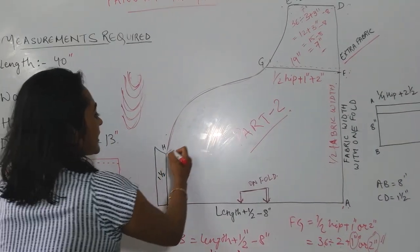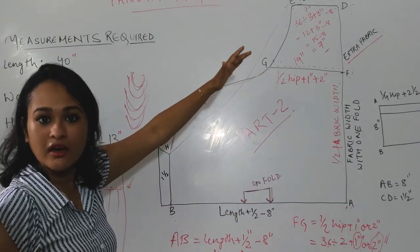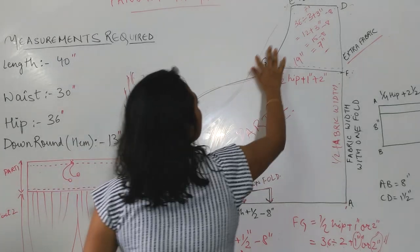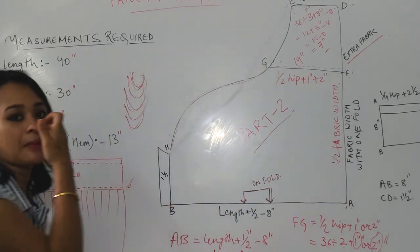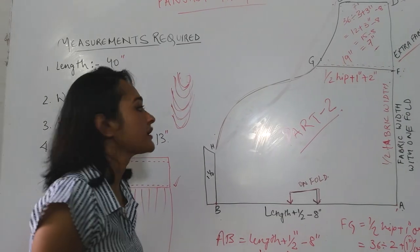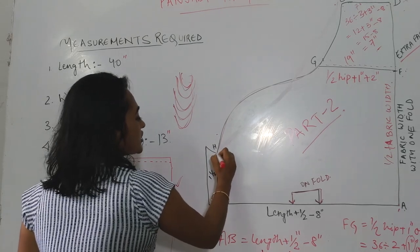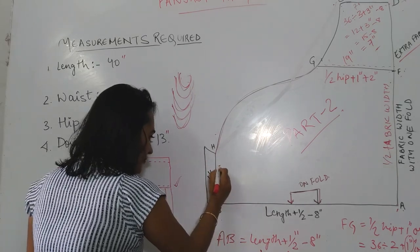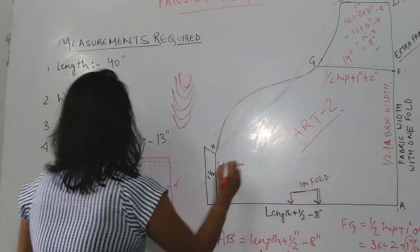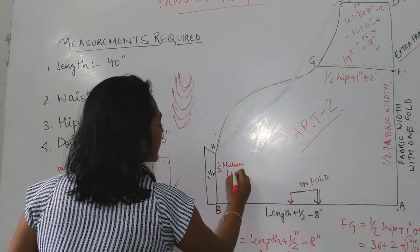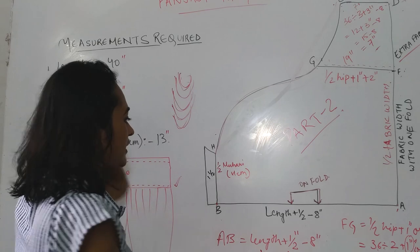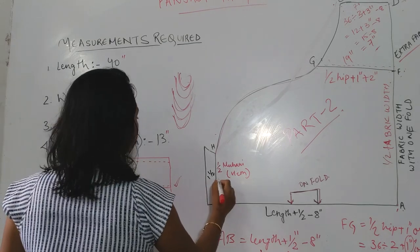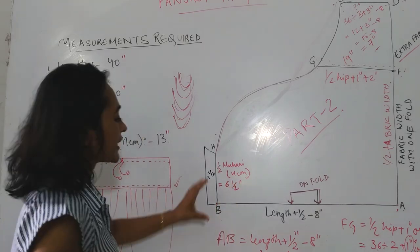What many tailors do is they take a straight line and then start the stitching process. But this straight line does not give you a proper Punjabi Patiala with its characteristic folds. Now what we have to do is find the H point. B and H: H is half Mughuri. Mughuri means the down round hem. The hem is at the bottom. We take the measurement of half. I have 13 inches here, that means 13 inches divided by 2 is 6 and a half inches. So I have taken 6 and a half inches here.